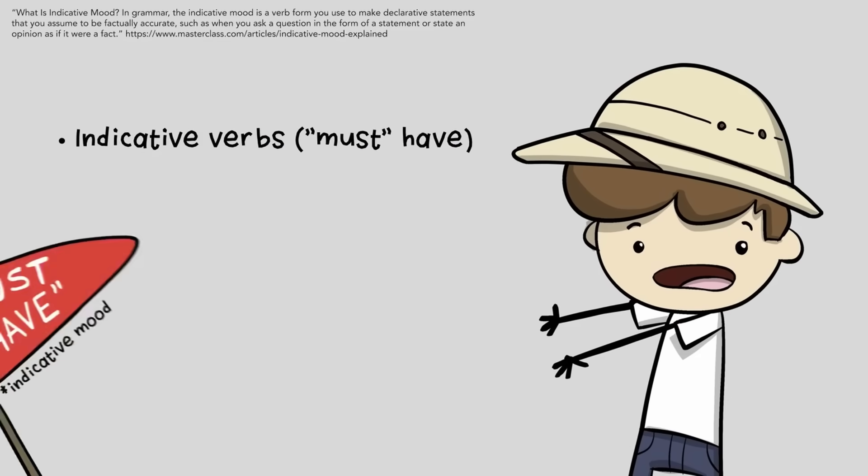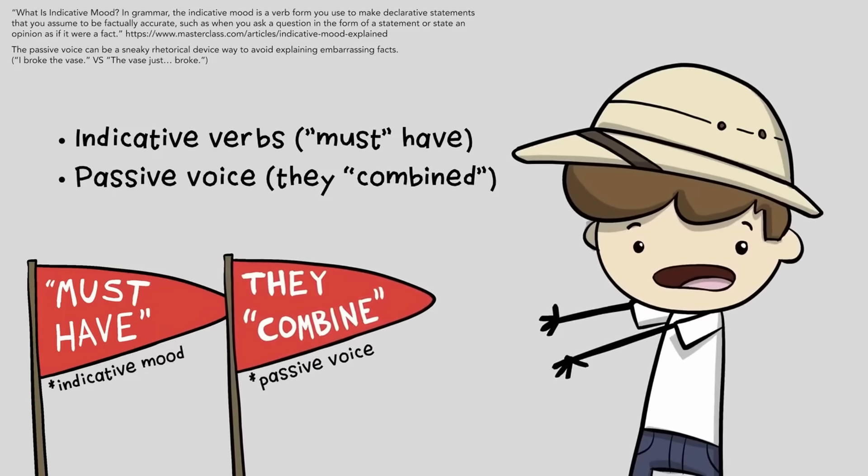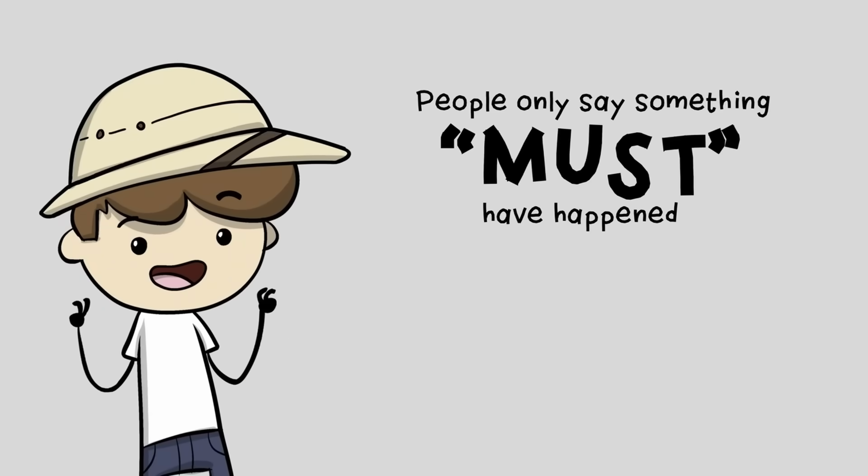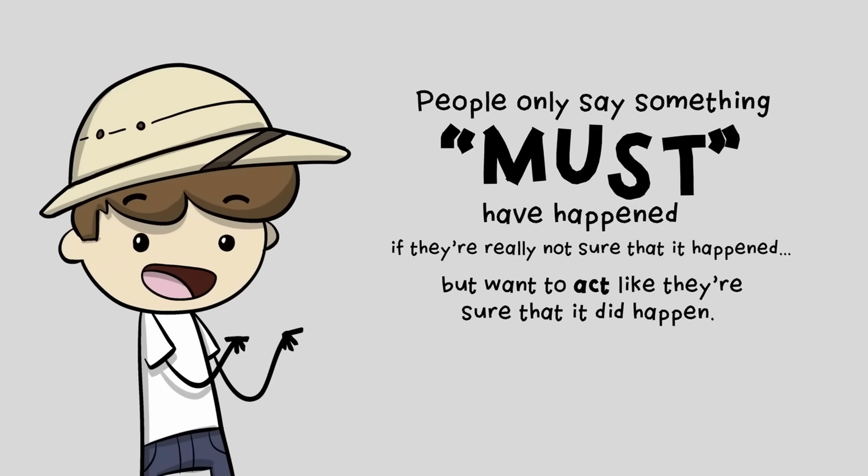If you see words like 'This must have happened,' or people casually slipping into the passive voice or past tense, you can be pretty confident that it's storytime. People only say something must have happened if they're really not sure that it happened, but want to act like they're sure that it did happen.